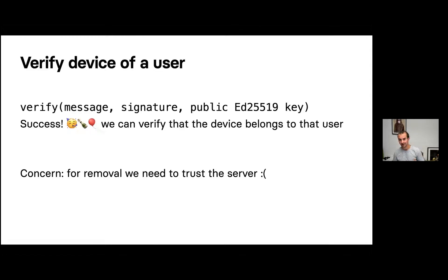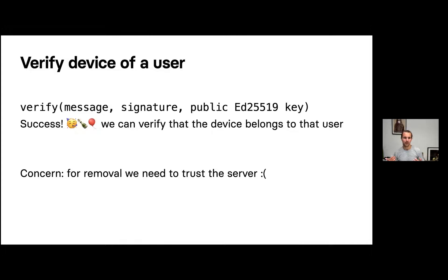One hard part in a distributed system is: once you prove something is valid, it's really hard to make it invalid — similar to the certificate revocation problem. You can limit the time frame of verifications, or trust the server to remove access and tell everyone something was revoked. There are possibly better approaches with zero-knowledge proofs — still evolving and learning.